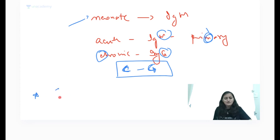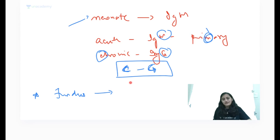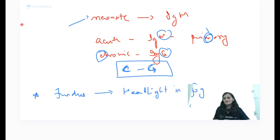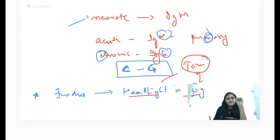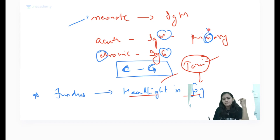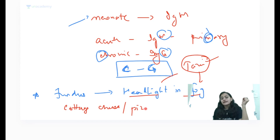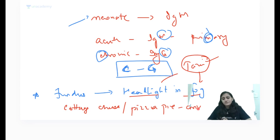Since we're at toxoplasma — the fundus appearance in toxoplasmosis is 'headlight in fog.' Think of a taxi going in fog — taxi sounds like toxo. CMV shows a cottage cheese and tomato ketchup or pizza pie appearance. Congenital syphilis and congenital rubella both show a salt and pepper appearance on fundus.